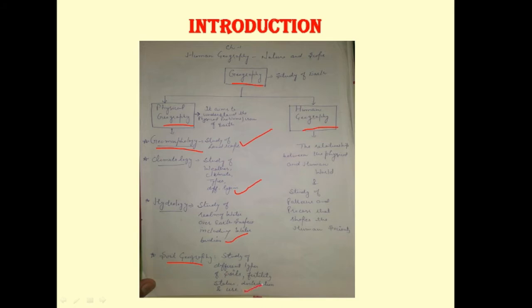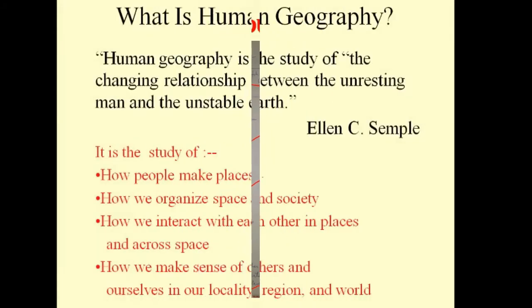In human geography, we'll study about the relationship between physical and human world, or you can say that it is the study of different patterns and processes that shape the human societies.